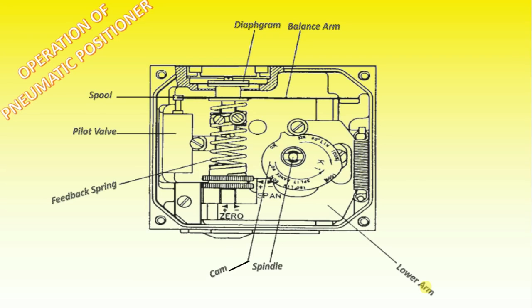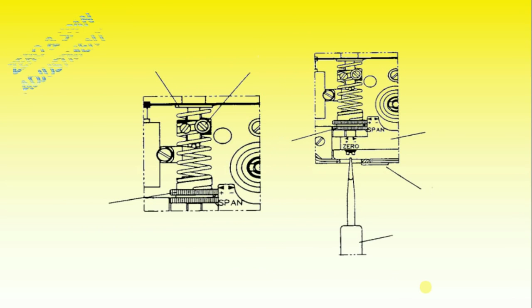Do you know how to adjust zero and span for pneumatic positioners? Span is adjusted with the brass colored upper thumb wheel located on the feedback spring. To adjust the span, always return to minimum input signal first, then loosen the locking screw and turn the thumb wheel. Tighten the screw when span is set.